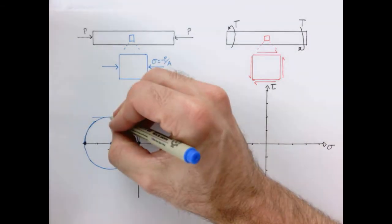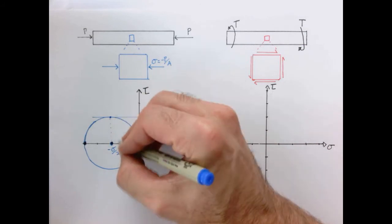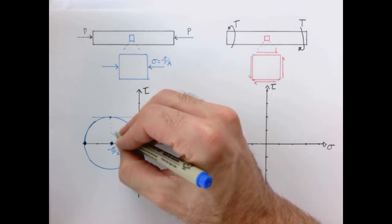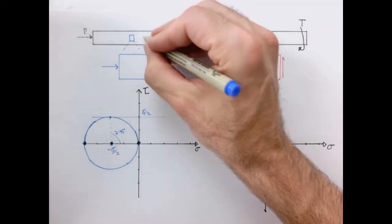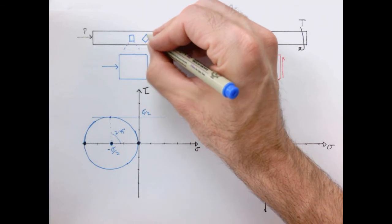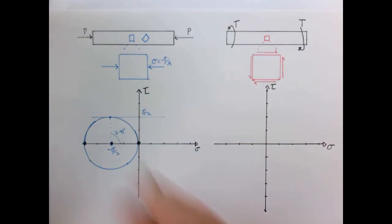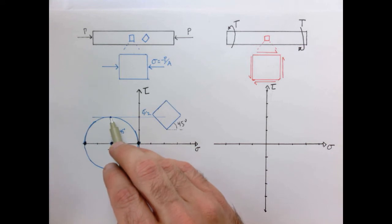So how do we interpret this result? Well, if we want to know what the state of stress is of an element, which is tilted at 45 degrees, right? Because remember, this angle here is two times 45 degrees. So what happens when we extract an element at 45 degrees instead of the one we did here, this would describe the state of stress.